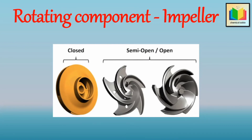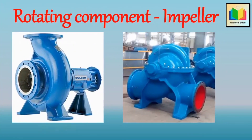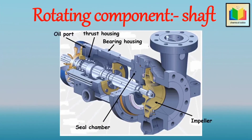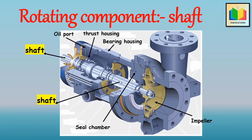Open or semi-open type impellers are used for viscous liquids or liquids containing solid materials, and on many small pumps for general service. Impellers may also be of the single suction or double suction type. If liquid enters from one side, it is a single suction type; if liquid enters from both sides, it is a double suction type. The next rotating component is the shaft, whose basic purpose is to transmit torque when the pump is started and during operation, while supporting the impeller and other rotating parts.